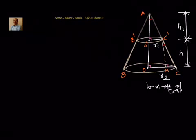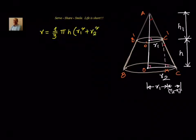The frustum of a cone volume is given by a formula. Let's write it down: Volume = (1/3) π h (R1² + R2² + R1·R2), where h is the height of the frustum and R1, R2 are the radii of the lower and upper ends. This is the volume of the frustum of the cone, which we are going to derive now.